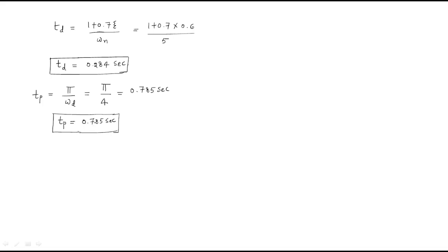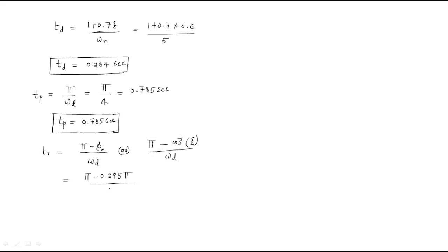Next, we find the rise time. The formula for rise time is: tr = (π - φ) / ωd, or equivalently tr = cos⁻¹(ζ) / ωd. Here φ = 0.295 radians and ωd = 4. By calculation, the rise time tr = (π - 0.295) / 4 ... wait, using tr = φ / ωd gives tr = 0.295 / ... the rise time value is 0.5537 seconds.